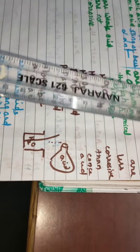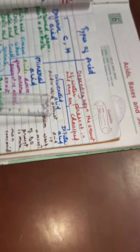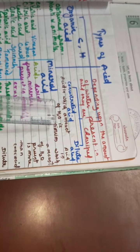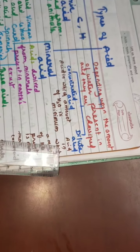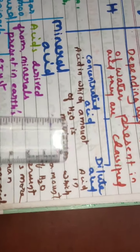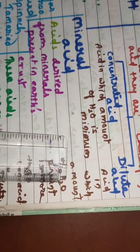Now, depending upon the amount of water present in acid, they are classified as concentrated acid and dilute acid. Concentrated acid is acid in which the amount of water is minimum.